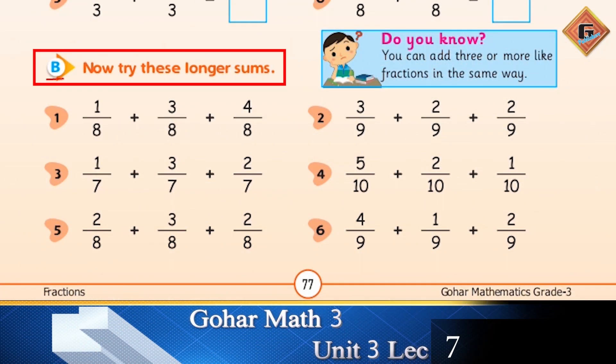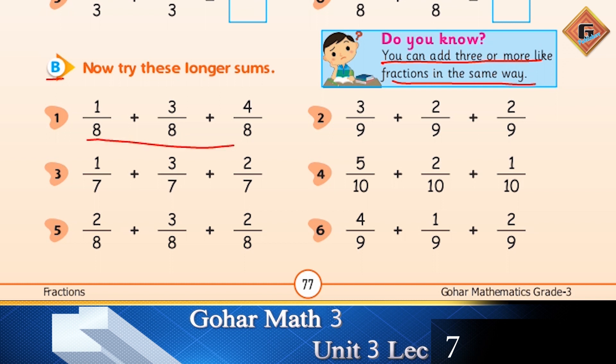Move to Part B. Now try these longer sums. You need to remember that you can add three or more like fractions in the same way. The pattern and method remain the same - we do not add the denominators, we only add the numerators.